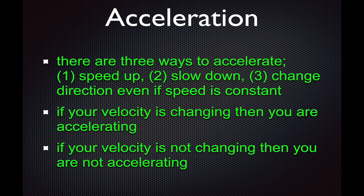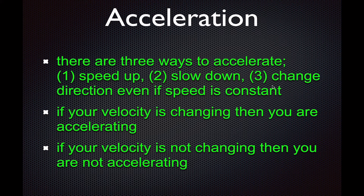There are three ways to accelerate: you can speed up, you can slow down, or you can change your direction. All of those are acceleration because all of those involve changing velocity. Velocity is also a vector quantity. The most common example of changing direction is going around in a circle at a constant speed — you're always changing your direction, so you're always accelerating. If your velocity is changing, you're accelerating. If your velocity is not changing, you're not accelerating.